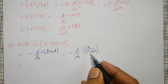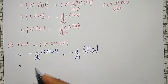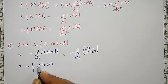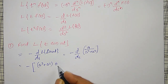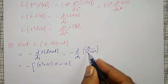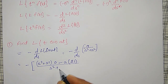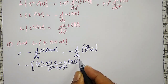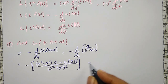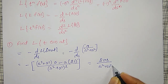To differentiate this, I will use the u by v rule. That is minus into: denominator s squared plus a squared times differentiation of a with respect to s is 0, plus minus a into differentiation of s squared plus a squared with respect to s, which is 2s. All divided by s squared plus a squared, the whole square. Simplifying, this becomes plus 2as divided by s squared plus a squared, the whole square.